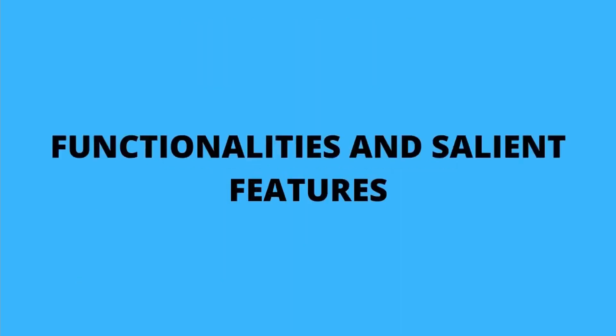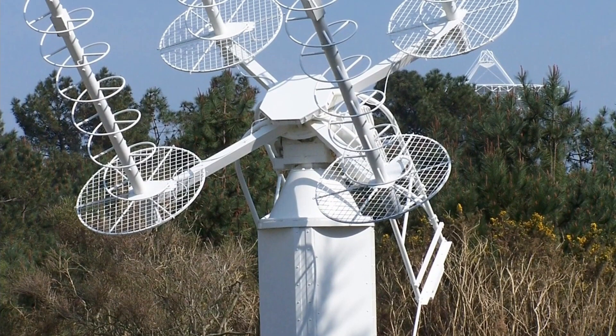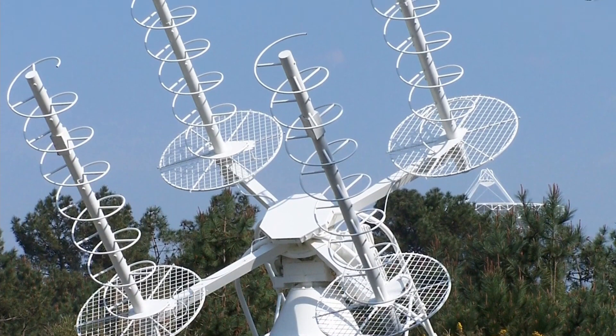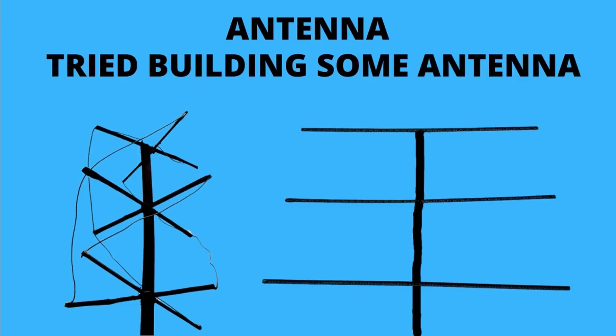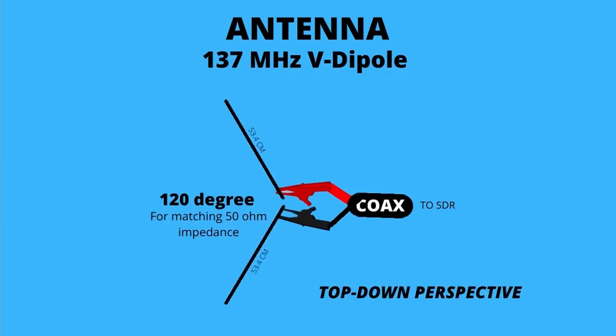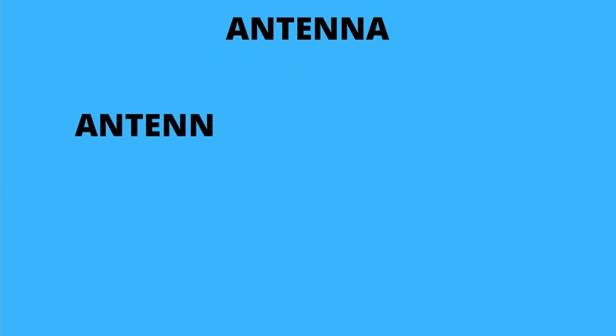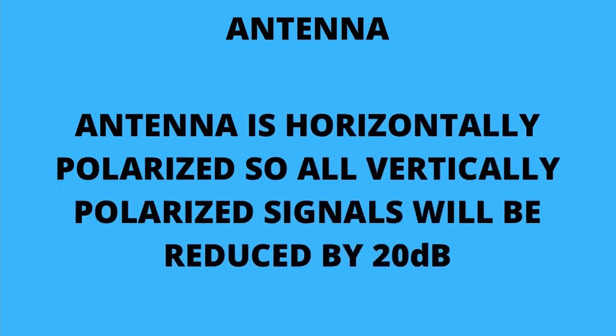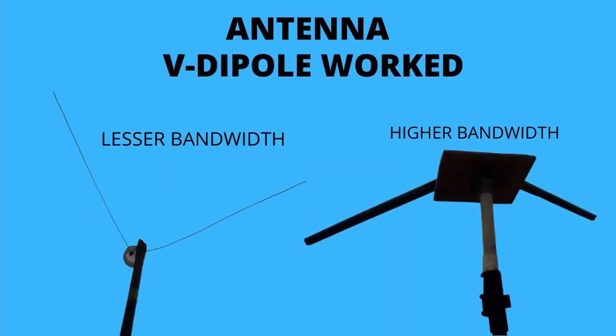To get the signal of the satellite, we need an antenna that should be cheap but also serve the purpose. We tried making some antennas, but they were not performing as needed and were catching other noise. So we decided to make a V-Dipole antenna, because it is horizontally polarized and will reduce vertically polarized radio stations and other broadcasts by 20 dB. This antenna was first made with thin wire, which gave it less bandwidth and made it less efficient for other frequencies considering the Doppler effect.